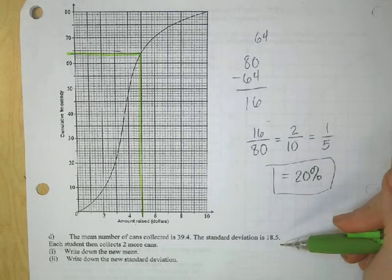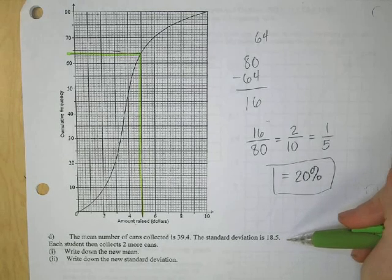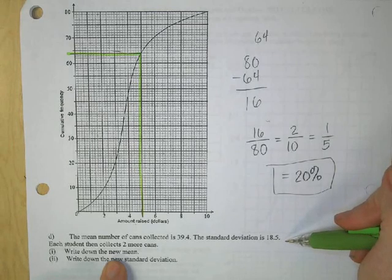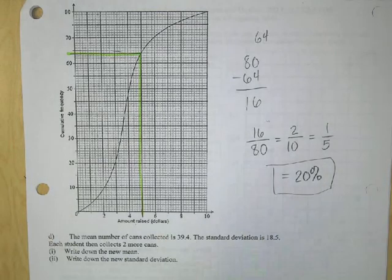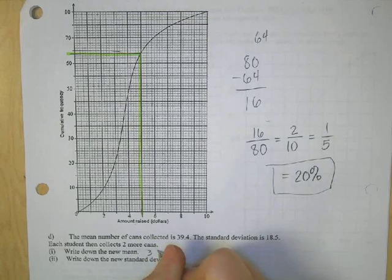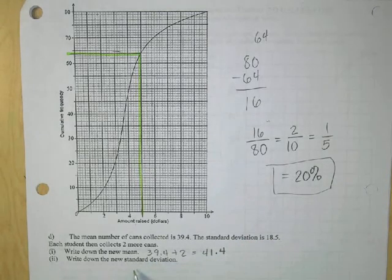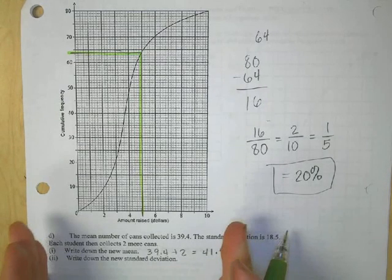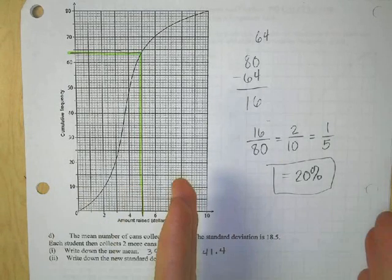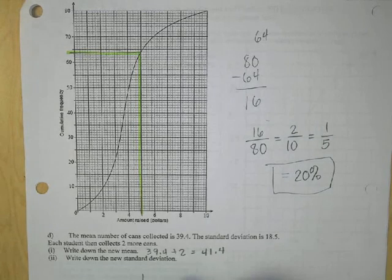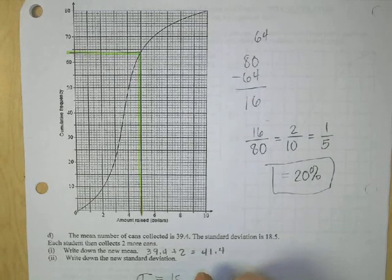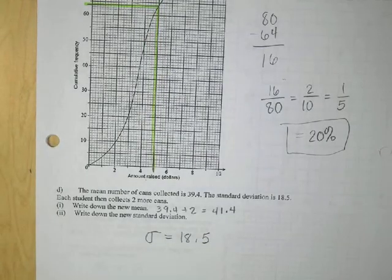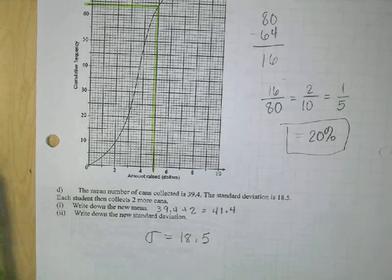The mean number of cans collected is 39.4 and the standard deviation is 18.5. Each student then collects two more cans. The new mean is 39.4 + 2 = 41.4 — measures of center shift right by two. The new standard deviation remains 18.5 — adding a constant doesn't change spread. Standard deviation only changes when you multiply or divide the data. Good luck on your quiz on Friday!